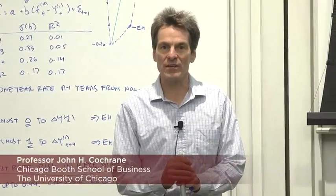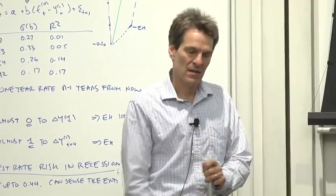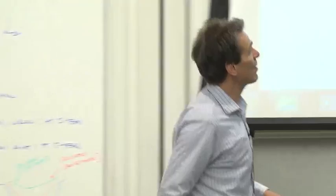We decided to stop guessing and go look in the data. How does the expectations hypothesis work in US data? The central prediction is that when the yield curve is upward sloping, that should be on average followed by higher interest rates.